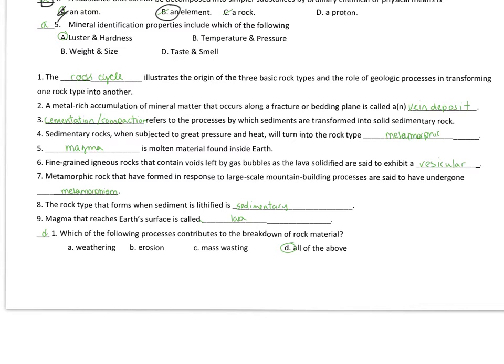A little fill-in. The rock cycle. Remember, the rock cycle was proposed by James Hutton, and it really goes through how any rock can become any other rock. It illustrates the origin of the three basic rock types and the role of geologic processes in transforming one rock type into another. So, remember, an igneous rock can become a sedimentary rock, a metamorphic rock, or even, if it melts, it can become an igneous rock again.